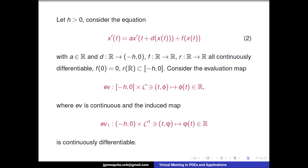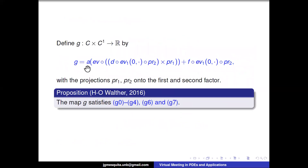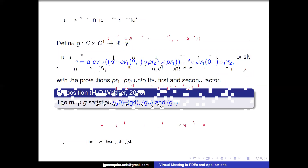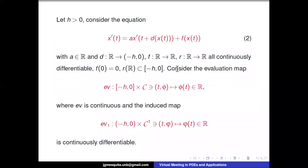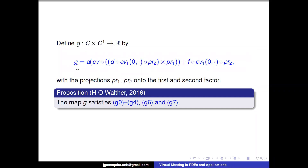Using this evaluation map, it is possible to define G as this composition where we have two projections — one in the second factor and one in the first factor. This allows us to rewrite the equation in abstract form. Moreover, if we define G in this specific way for our model, we can verify that G satisfies all the desired conditions.